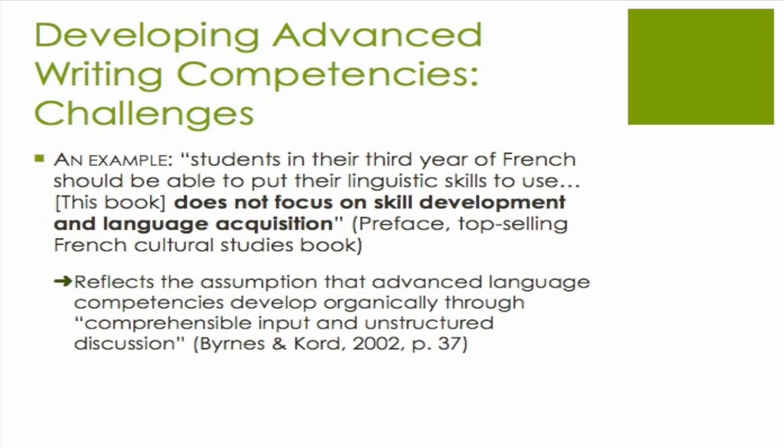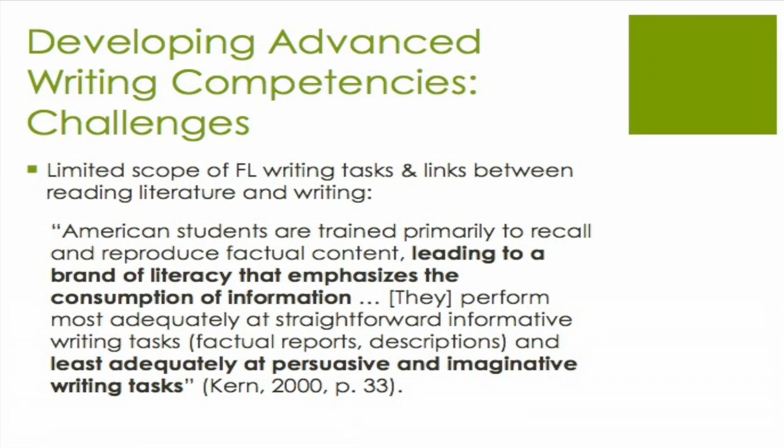A top-selling French cultural studies textbook states: 'Students in their third year of French should be able to put their linguistic skills to use. This book does not focus on skill development and language acquisition.' This reflects the assumption that advanced language competencies just develop on their own without explicit attention — as if it's an organic process. The challenge specific to advanced writing is two-fold: the limited scope of foreign language writing tasks to which learners are exposed, and the limited links between literature and writing. Students often don't see that the literature they read can serve as a model for their own writing.